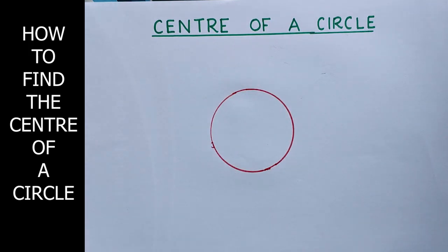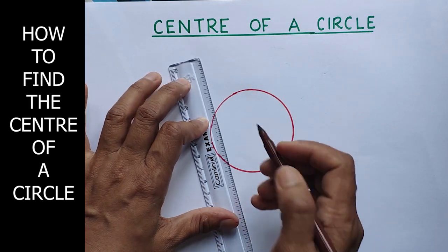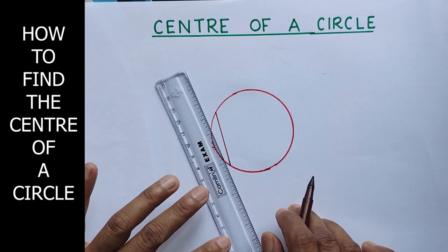Okay, so here we cannot easily find the center of the circle. So, for that I am going to draw two chords. They are not parallel. So, here I am taking one chord. We know that chord is a line segment.